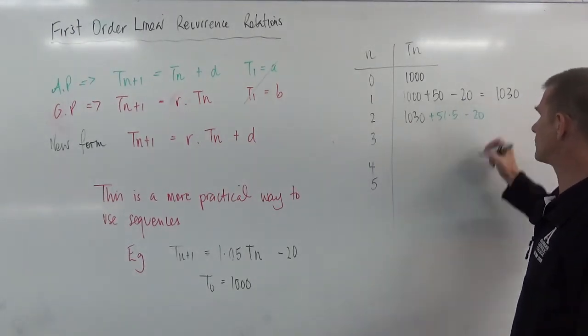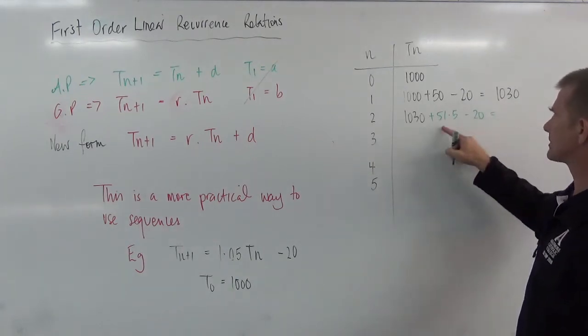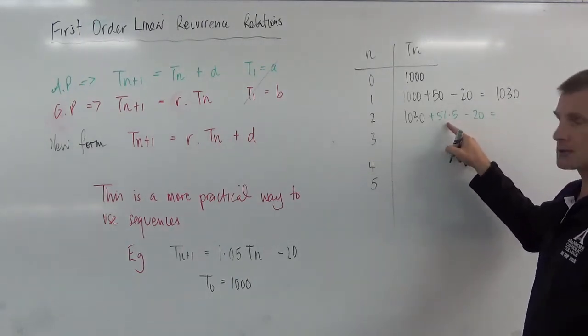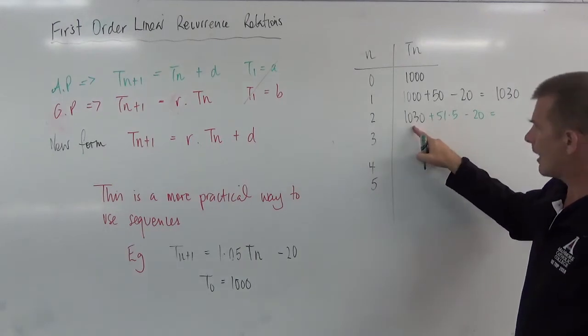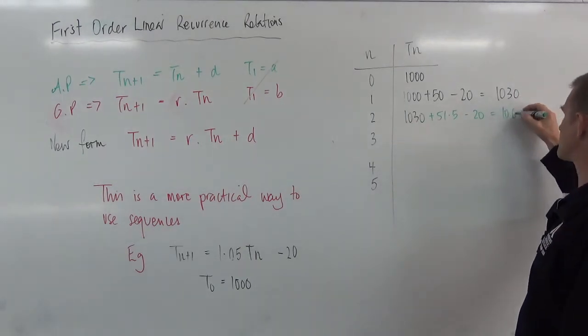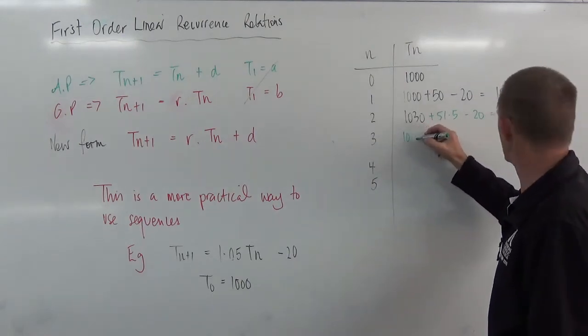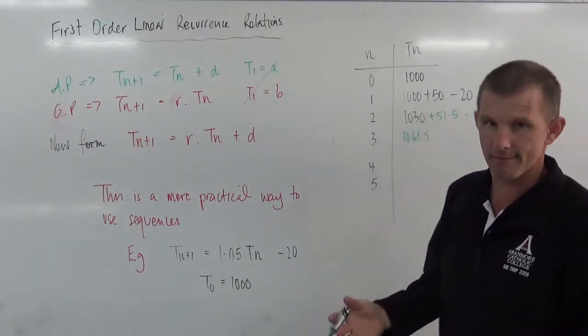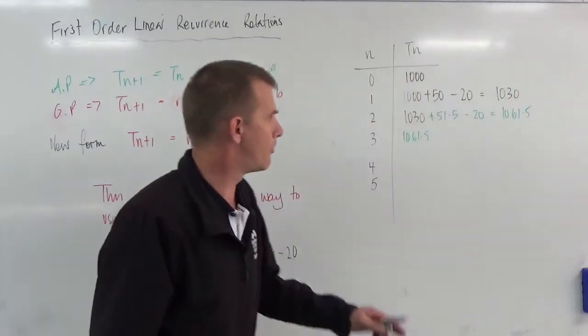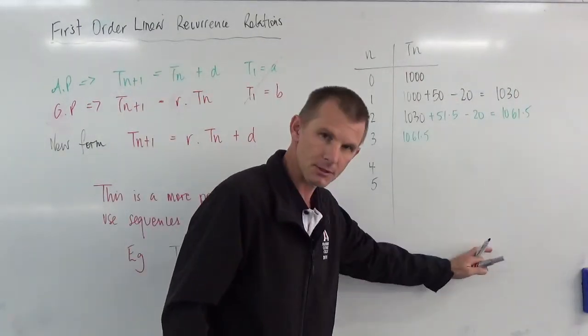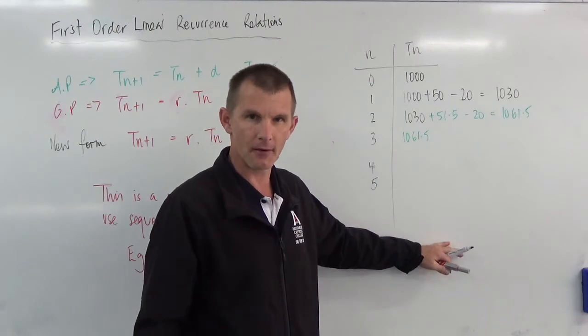And the same minus 20 would happen here. Now, that means that the difference here is 31.5. Adding it on there gets me 1,061.5. Now, again, I'd have to decide what I'm going to do with that .5. I mean, of course, I can't have .5 for sheep, but I might do my numbers and then round at my final answer.